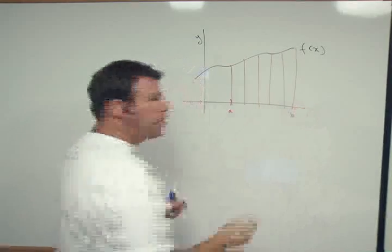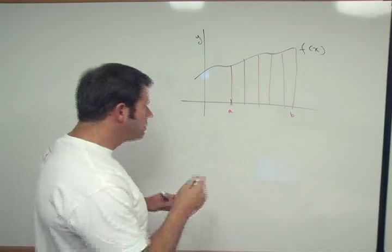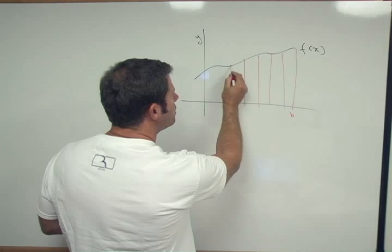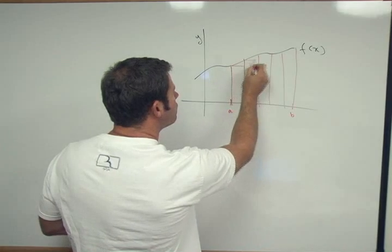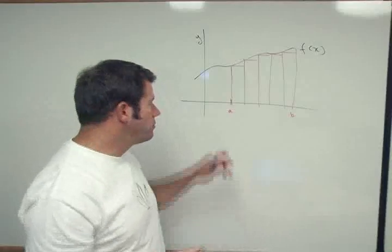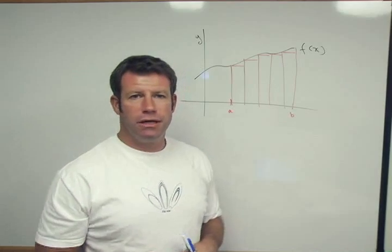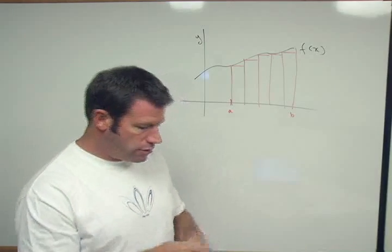What's the height of each strip? I can say the height's going to be wherever the left-hand edge intersects the function. Now, obviously, there's a little bit of area that we're leaving on the table here. So this is going to be a low estimate.